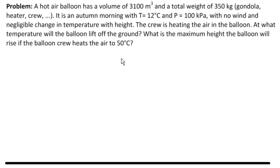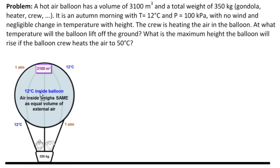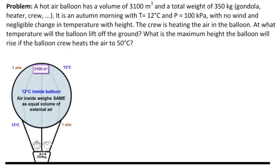First, let's understand the problem. We have a balloon with a volume of 3,100 meters cubed and a weight of 350 kilograms. It's 12 degrees Celsius outside and there's one atmosphere of pressure — sitting on the ground. So: 350 kilograms, 1 atmosphere, 12 degrees outside, and at this particular moment, 12 degrees inside the balloon. The air inside weighs the same as the equal volume of external air. Pretend it's like a hard balloon that can't collapse — just sitting there with air inside from the outside.